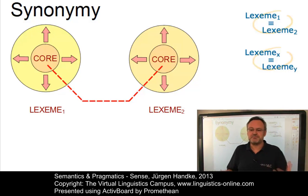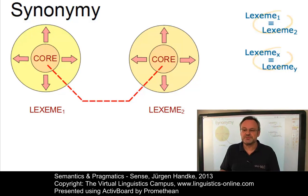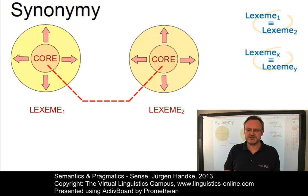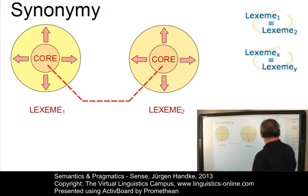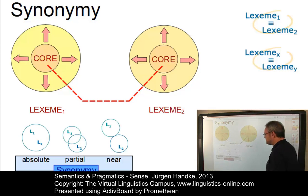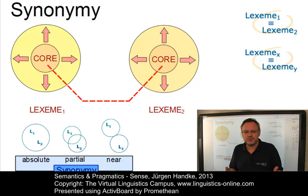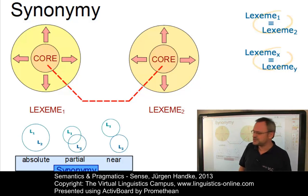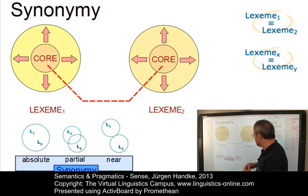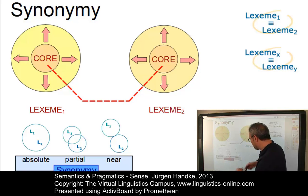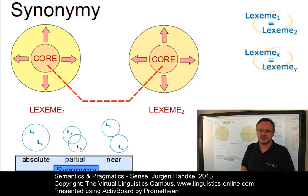Intuitively, some pairs of synonyms are more synonymous than others. Thus, three degrees of synonymy are often distinguished: absolute synonymy, partial synonymy — some sort of overlap — and near synonymy.